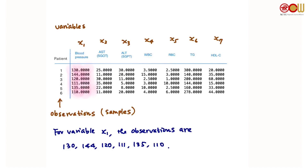Let's give some names — the terminology. We call each test a variable. So for example, blood pressure is a variable and cholesterol level is a variable. Each of these tests is a variable: x1, x2, x3, x4, x7. And we call the numbers that we have for these patients observations. For variable x1, we have six observations: 130, 144, 120, and so on. We call these observations or samples.